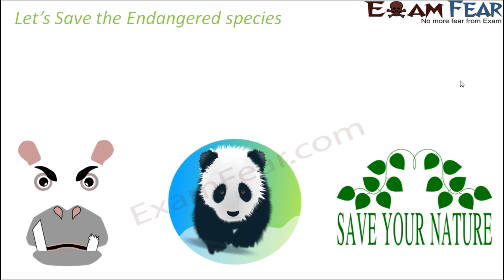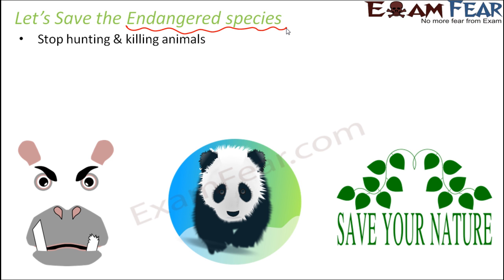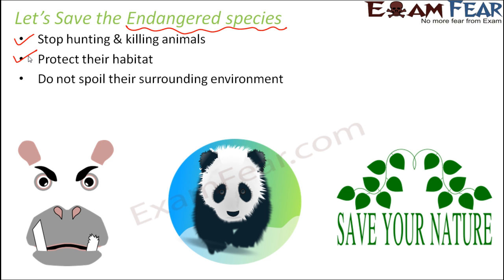Therefore it is extremely important to maintain the balance between the various components of the ecosystem. Let us all save the endangered species, as they are already very low in number. To save them, we must stop hunting and killing them, because that reduces their numbers even further. We must also protect their habitat — if we cut down forests, the animal will die on its own because it needs that specific environment for survival.